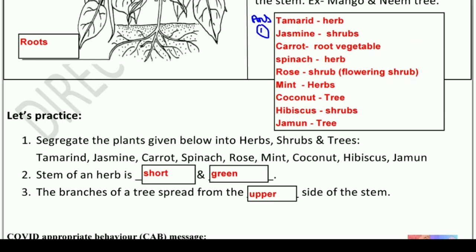On the basis of these topics, let's do some questions and answers. First question: segregate the plants given below into herbs, shrubs, and trees. The answer: tamarind (इमली) is a tree; jasmine is a shrub; carrot — it is a root vegetable, but since it also has a shrub-type growth above it, it can be counted as a shrub.